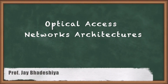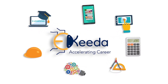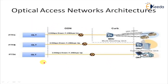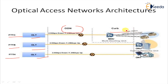Hello students, here we are going to learn about optical access networks architecture. We will discuss three different architectures: FTTC (Fiber to the Curb), FTTB (Fiber to the Building), and FTTH (Fiber to the Home). They provide different speeds like 2.5 Gbps downstream and 1.2 to 2.5 Gbps upstream.